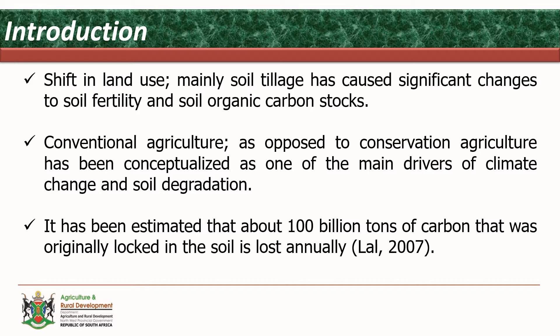Conventional agriculture, as opposed to conservation agriculture, has been conceptualized as one of the main drivers of climate change and soil degradation. Our farmers, in particular in the northwest, use a lot of the mouldboard tillage plows. In the process of cultivating their lands, the fertile topsoil goes underneath and the infertile subsoil comes on top. The disk plows further deteriorate the soil structure and texture, leaving the soil much more susceptible and prone to both wind and water erosion.